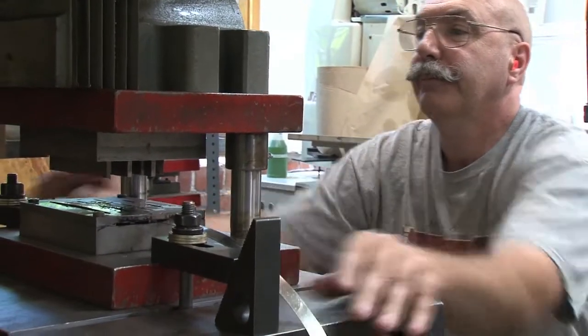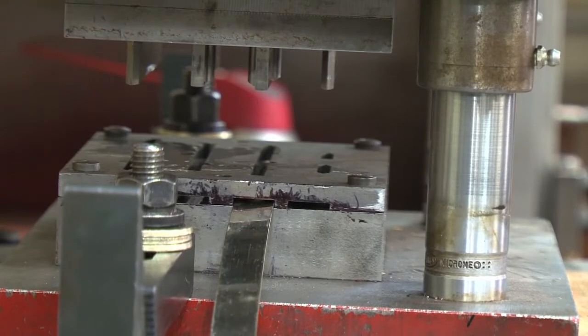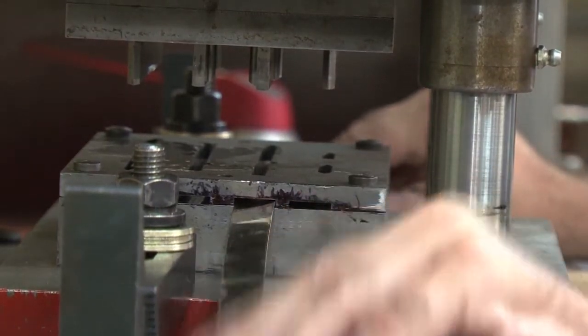Flat silver stock is fed through a die to punch and form the radius of a left hand flute rib.